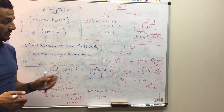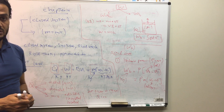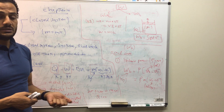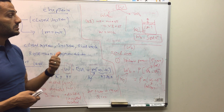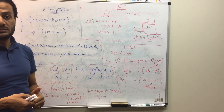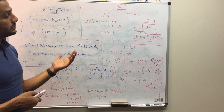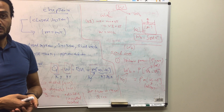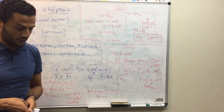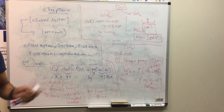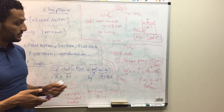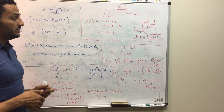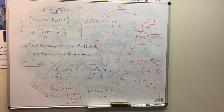There are also other special cases, including the polytropic process where PV^n equals a constant, and the isothermal process. Let's consider these processes. The second special case is the polytropic process.